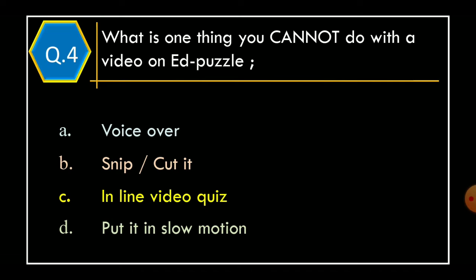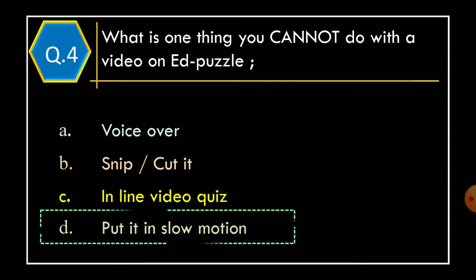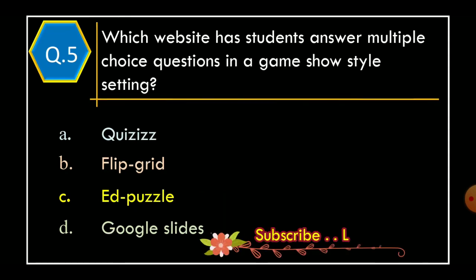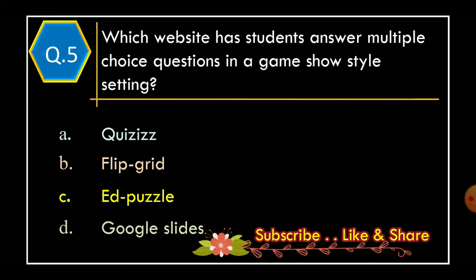And the correct option is Option D: Put it in slow motion. Question 5: Which website has students answer multiple choice questions in a game show style setting?